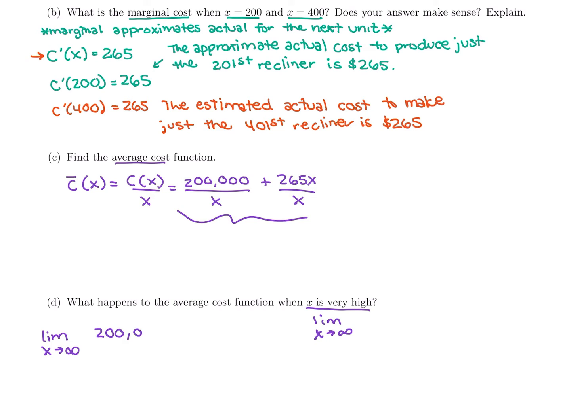And we're going to take it of this function up here. So I'm going to keep it as 200,000 over x, and then the next piece is 265x over x. I might just write it as plus 265 since those x's cancel.